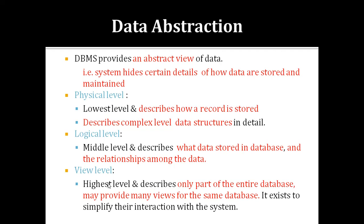The first concept we will see is data abstraction. The first characteristic of a database system is that it provides an abstract view of data. The system hides certain details of how the data is stored and maintained. The abstract view means a hidden view — users interact directly with applications without knowing how data is stored, processed, or maintained at the back end.